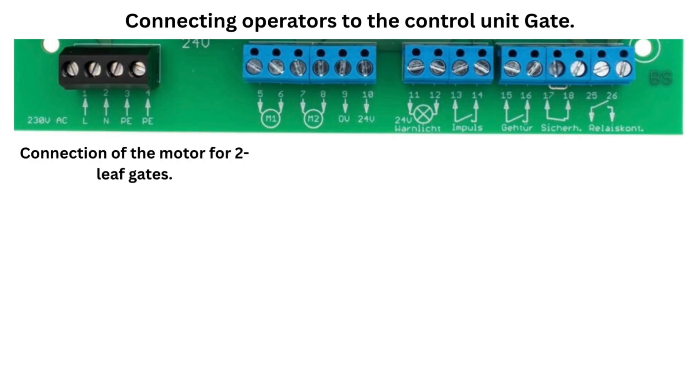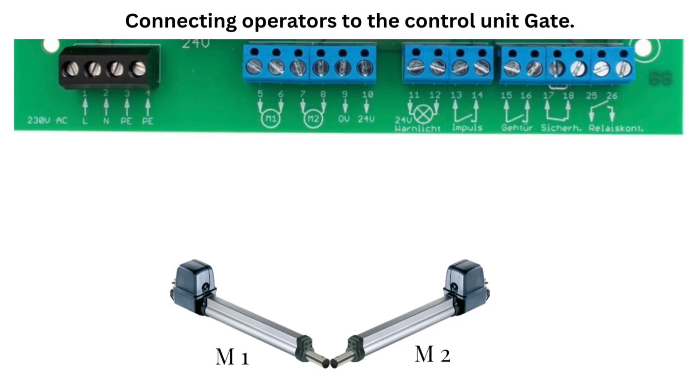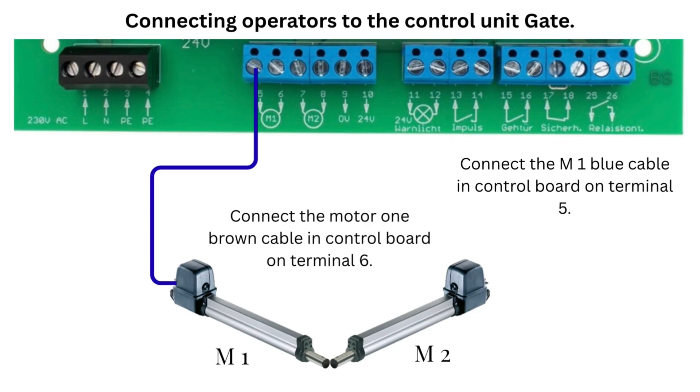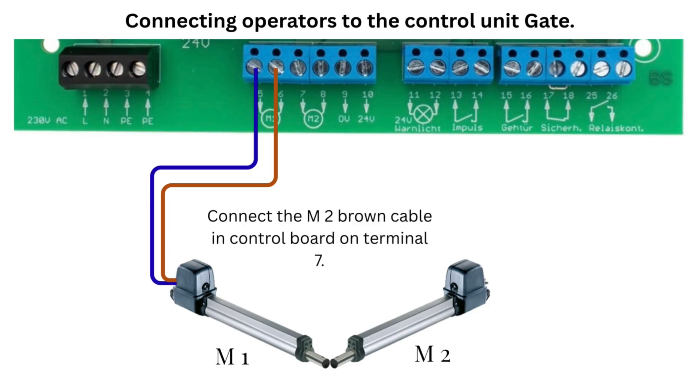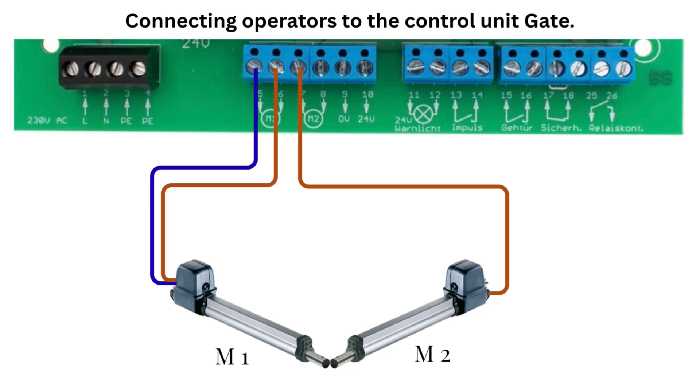Connection of the motor for two-leaf gates. Connect the motor 1 blue cable in control board on terminal 5. Connect the motor 1 brown cable in control board on terminal 6. Connect the motor 2 brown cable in control board on terminal 7. Connect the motor 2 black cable in control board on terminal 8.